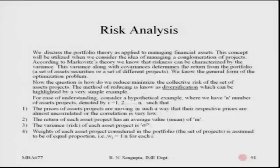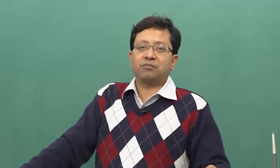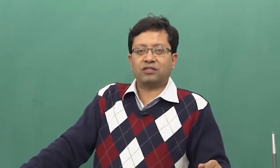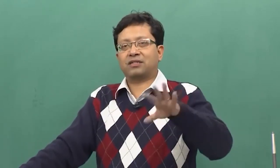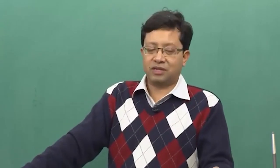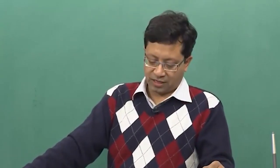The general form of the optimization problem: how do we reduce or minimize the collective risk of the set of assets or projects? The method of reducing risk is known as diversification — not putting all the eggs in the same basket. What we are trying to do is put investments into different buckets or baskets such that the overall risk is minimized to the maximum possible extent.